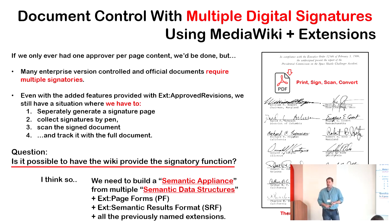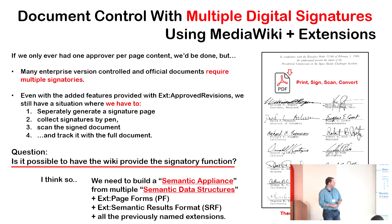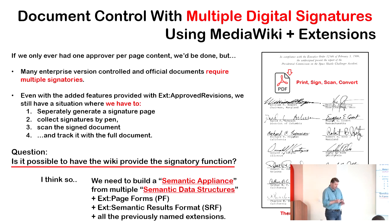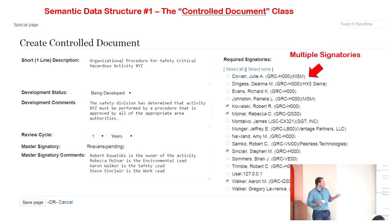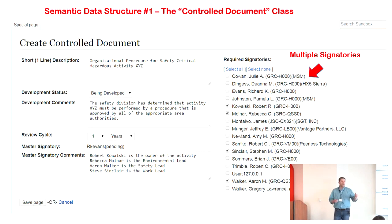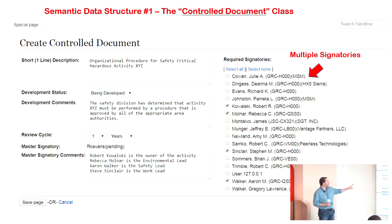I began to brainstorm: is there some really clever way with all the tools available in Semantic MediaWiki to provide the solution of multiple digital signatures for a given document? I think I've done it. Basically, I want to create a semantic class — a template, a form, and a category that work together to produce a semantic structure of page content — and I'm creating a semantic structure called a 'controlled document.'